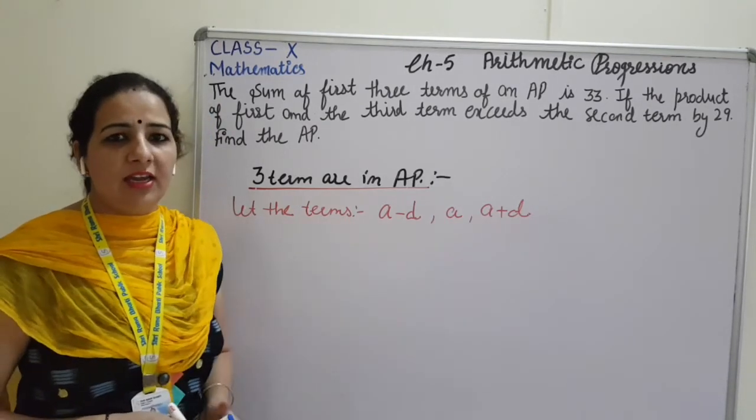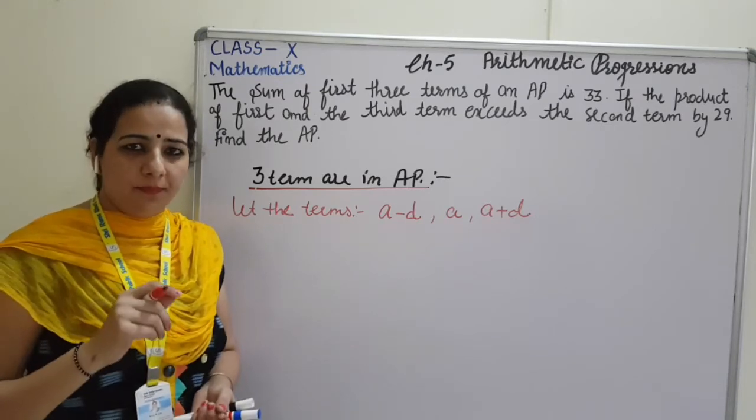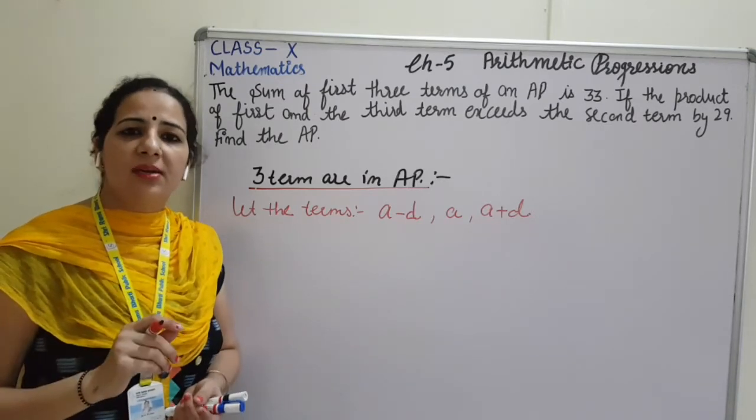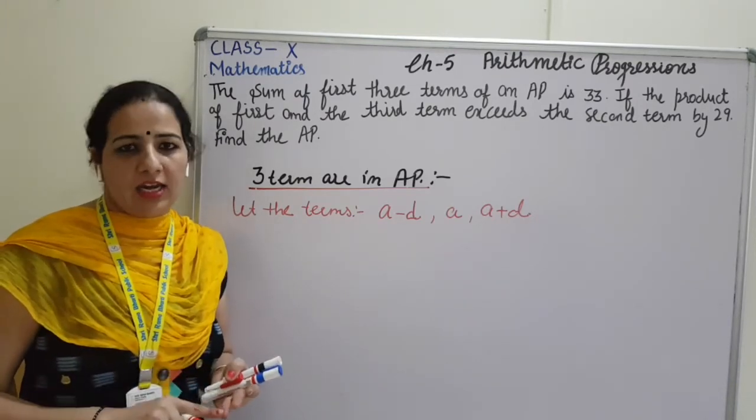So whenever they will give the line that the 3 terms are in AP, your first line of the answer will be: let the terms are A minus D, A and A plus D.